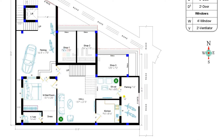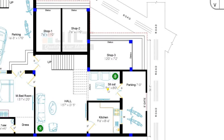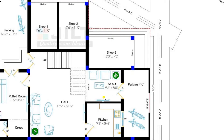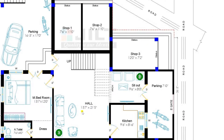Now entering into the plan, there is a 7 feet parking area where you can park motor vehicles. Entering into the ground floor plan, you can view there is a setout of size 9 feet 6 inches by 8 feet. This setout is comfortable and it is plotted with a sofa set and TV. Now entering into the hall through the arch — as per the client we have designed this model as a duplex model. The staircase is also available to move towards the first floor. The dimension of the hall is 15 feet 7 inches by 21 feet 5 inches.